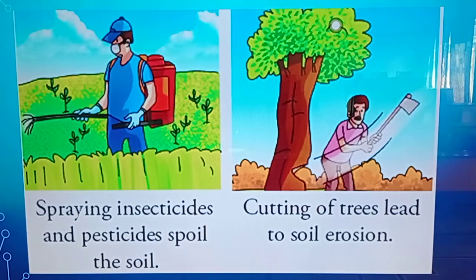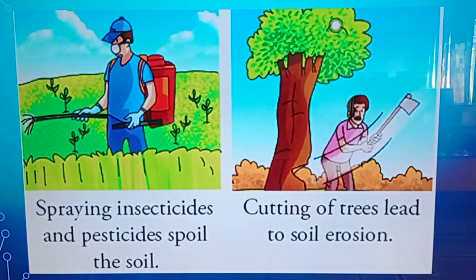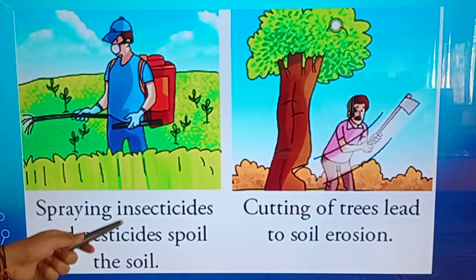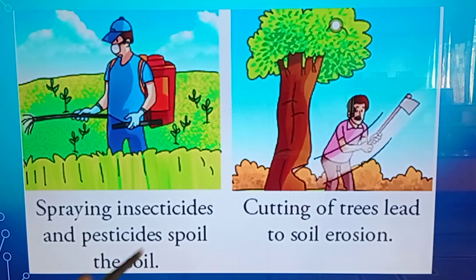As seen in the picture, spraying insecticides and pesticides spoils the soil. The more insecticides and pesticides are sprayed, the more soil fertility is damaged. Cutting of trees also leads to soil erosion.